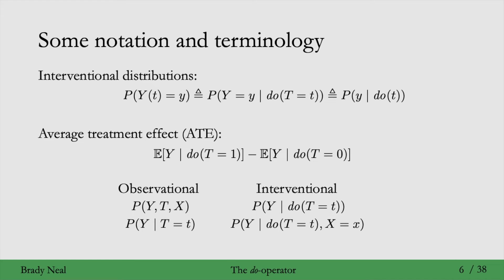Here's one more interventional quantity, which is the same as the one before, but now we are conditioning on a specific value of covariates. So interventional quantities have the do operator in them, and observational quantities do not. Importantly, observational quantities we can get from just the regular data — they don't require any experiments — whereas interventional quantities might require experiments, unless we can turn them into observational quantities.